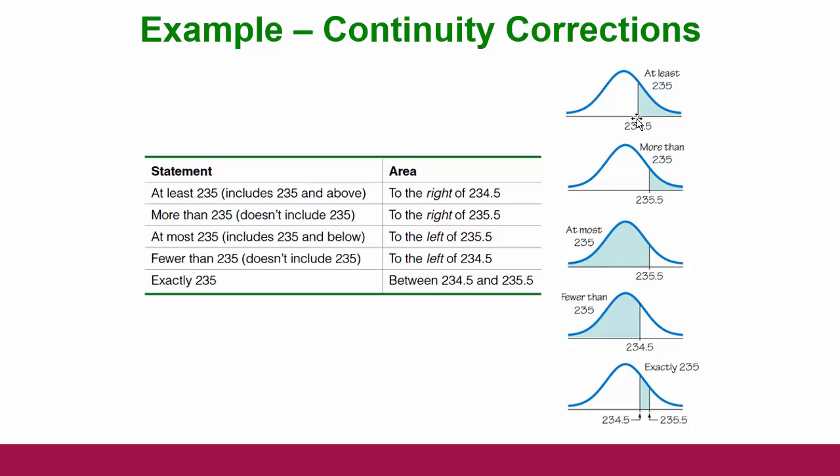If we want to know at least 235 wins, that's where we go from 234.5 and up, because we have to do this continuity correction. 235 is actually the area centered over 235, so we go down to 234.5 and above. You might be thinking: why don't we just do 235 and above? Technically the difference between using 234.5 and 235 is minuscule, but for homework purposes just know that they do these continuity corrections — you back it up to 234.5 if you want at least 235, and you go above 235.5 if you want more than 235.